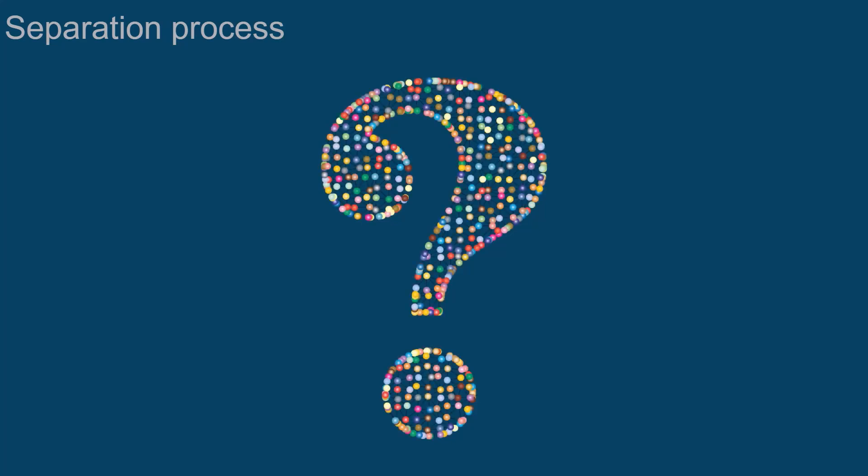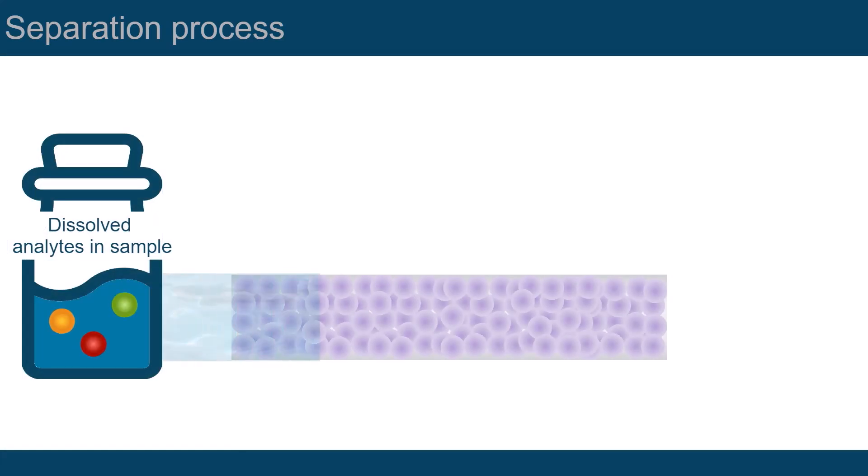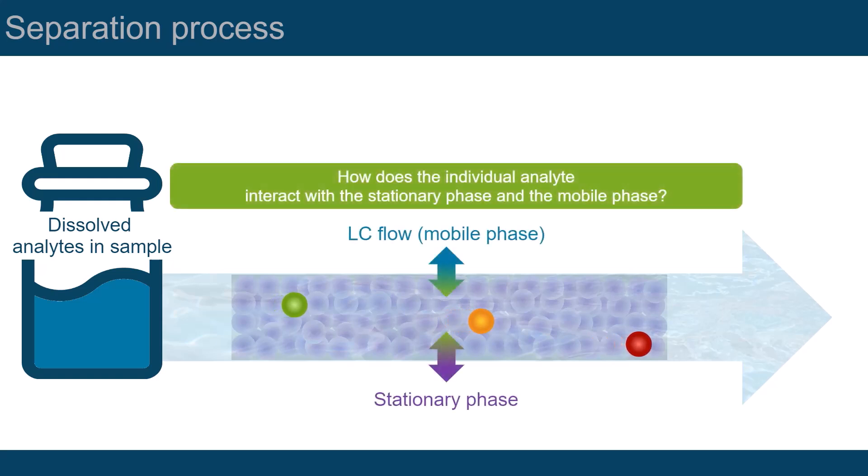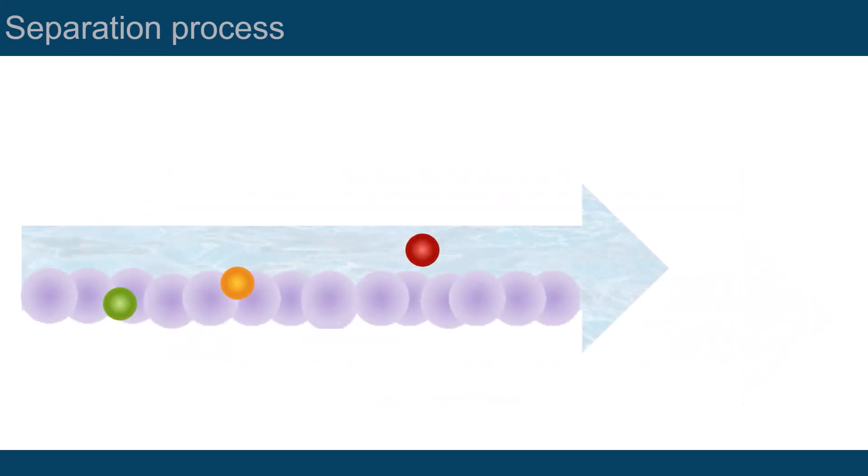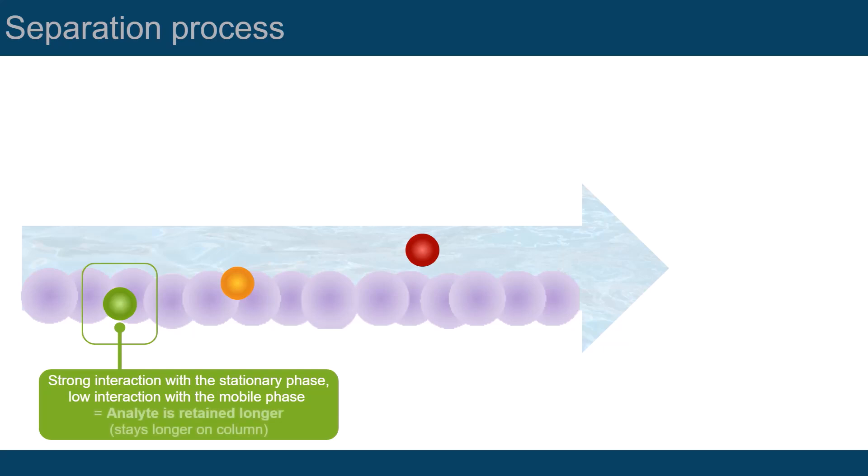So how can molecules be separated by liquid chromatography? Remember, the dissolved analytes are transferred into a flow of mobile phase, which takes them to a stationary phase. Now it is all about the specific interaction of individual analytes with the mobile and the stationary phase. Let's simplify the view and examine only the surface, where the mobile and stationary phases meet, and review the behavior of the green analyte. It has a strong interaction with the stationary phase, but a low interaction with the mobile phase. The result is that it sticks to the stationary phase, or in other words, it is retained longer.